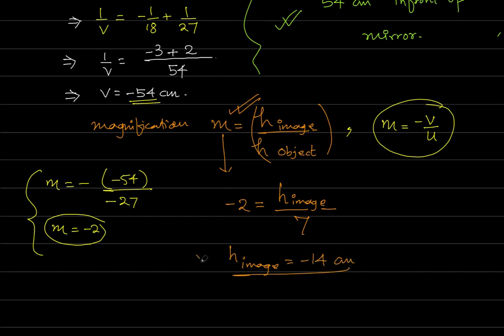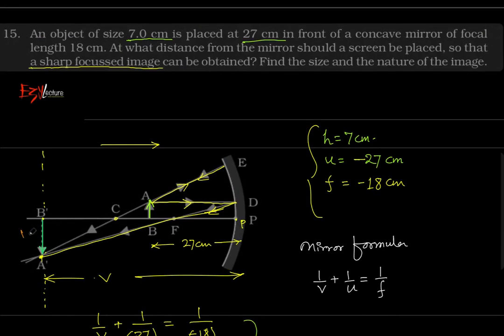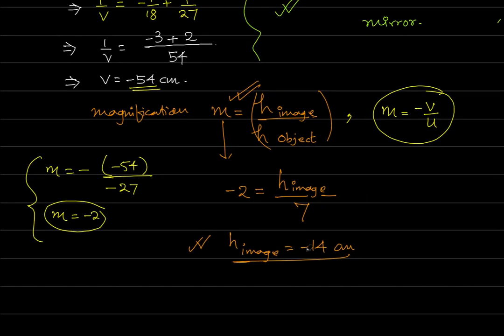Now, what does minus mean? This is the ray diagram. We have to know that the image is inverted. It will be inverted and it will be magnified. The negative sign indicates the inverted image. That's it.